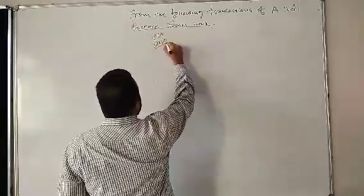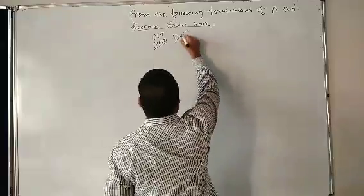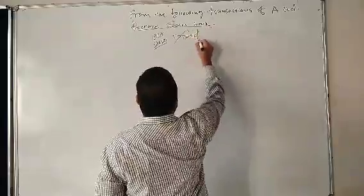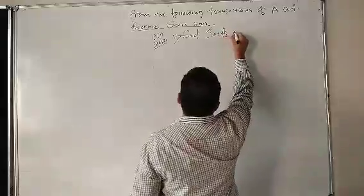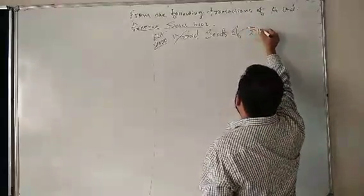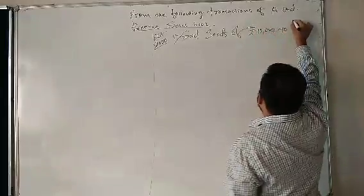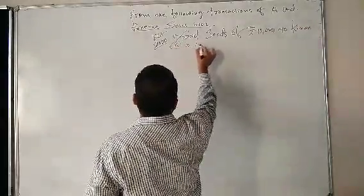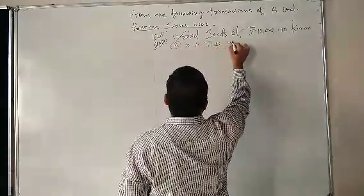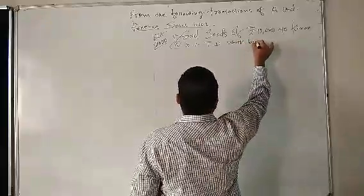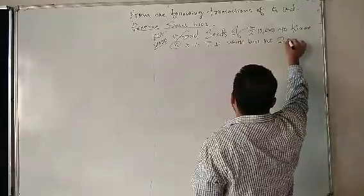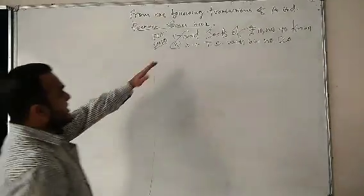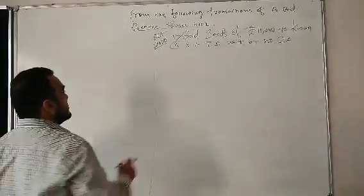Transaction number one: Sold goods of rupees 10,000 to Kiran at 10 percent trade discount with bill number 20.